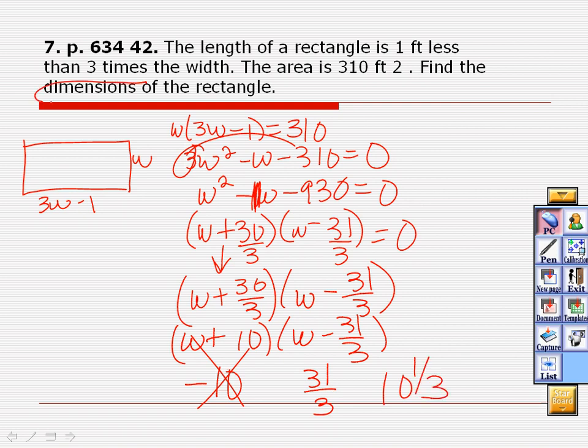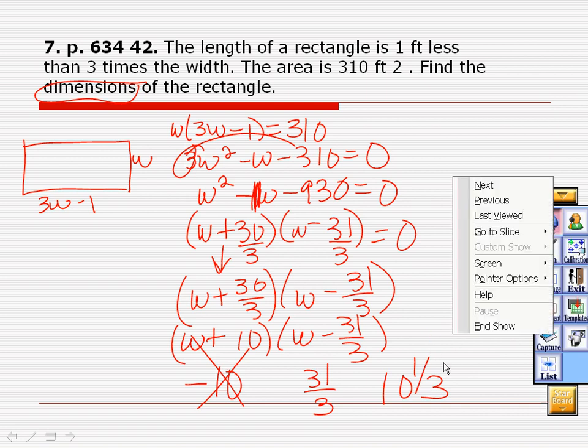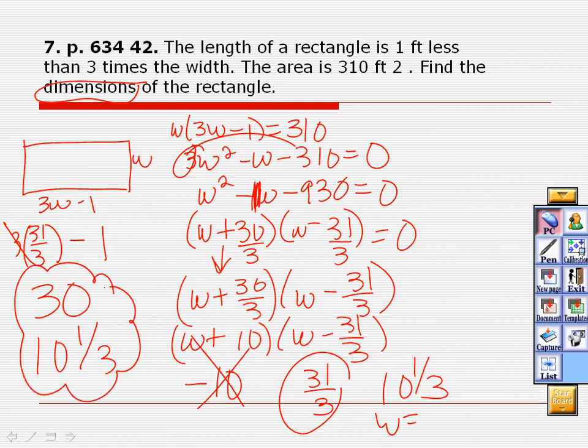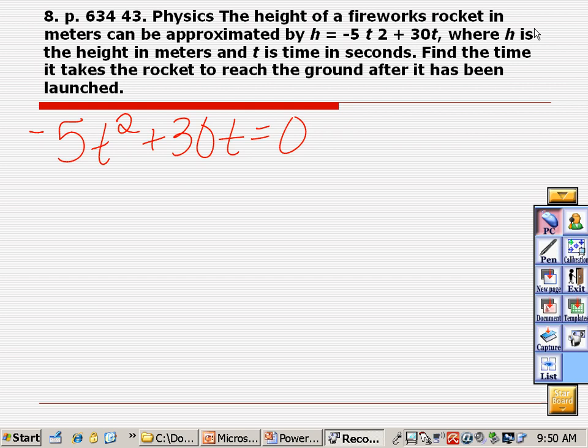And then the second answer is 31 over 3, which is 10 and 1 third if you want. Now, look at the problem. It says find the dimensions, and that's plural. We just found the width. Why did you get rid of the width? Because it can't be negative. The length and width can't be negative. Oh, what's up with that? Stop it. There it is. That's the width. So now I need to take my width, plug it in for w right here so I can find my length. And this works out very nicely. Three times 31 over 3, take away 1. All the answers will be small. Cross off the threes. 31, take away 1 is 30. So my dimensions are 30 and 10 and 1 third, or 30 and 31 thirds.